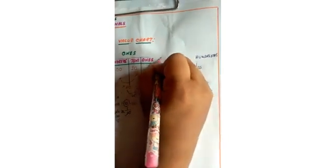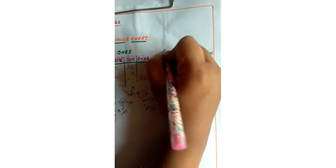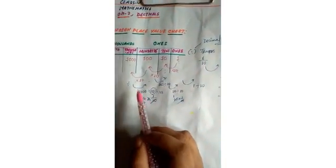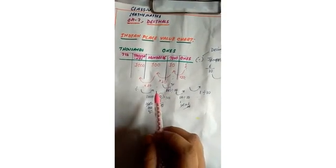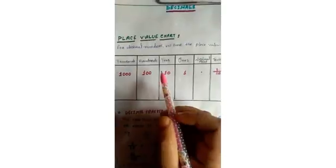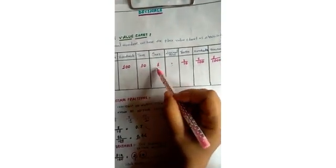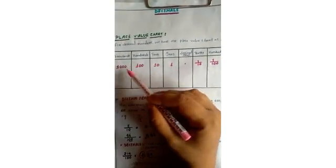In between ones and tenths we can separate them by putting a dot, and this dot is known as the decimal point. This is the Indian place value chart for decimal numbers. So finally we have: thousands, hundreds, tens, ones — decimal point — tenths (1/10), hundredths (1/100), thousandths (1/1000), and so on.